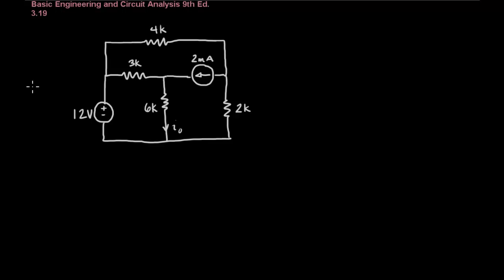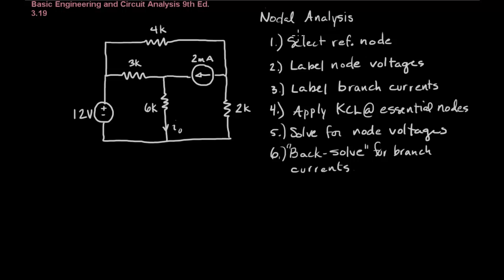We're going to do this using nodal analysis and when we do nodal analysis we have a very formal method that we use. First we select a reference node, then we label node voltages and branch currents, remembering to assign directions to those currents. Then we apply KCL and solve for the node voltages and then finally back solve for the branch currents.